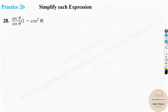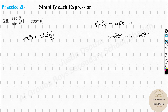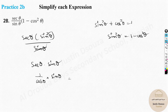Next expression: sec θ · (1 − cos²θ) / sin θ. Recognize that 1 − cos²θ = sin²θ from the Pythagorean identity. So it becomes sec θ · sin²θ / sin θ = sec θ · sin θ = (1/cos θ) · sin θ = sin θ / cos θ = tan θ. The simplified answer is tan θ.